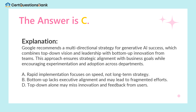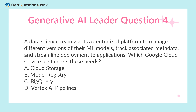Google recommends a multidirectional strategy for generative AI success, which combines top-down vision and leadership with bottom-up innovation from teams. This approach ensures strategic alignment with business goals while encouraging experimentation and adoption across departments. A. Rapid implementation focuses on speed, not long-term strategy. B. Bottom-up lacks executive alignment and may lead to fragmented efforts. D. Top-down alone may miss innovation and feedback from users.